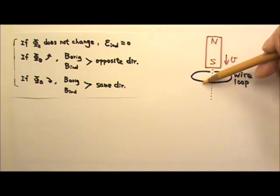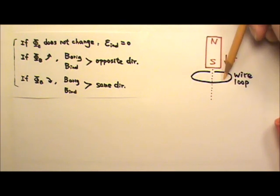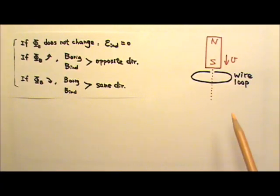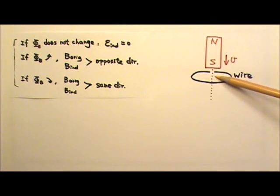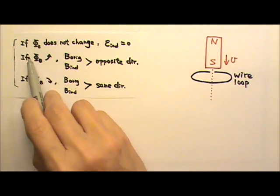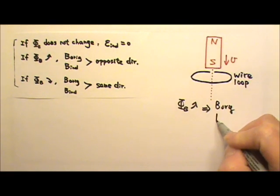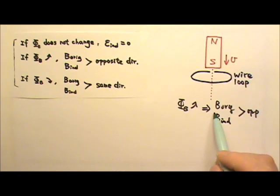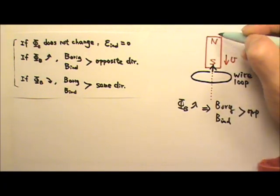For example, here I have a wire loop, and we are inserting this magnet into the wire loop. This v is the velocity of the magnet going down. Let's find the direction of the induced current. First, we look at whether and how the flux changes. Because we are pushing the magnet into the loop, we are making the magnetic field stronger, so the flux is increasing. The original magnetic field is produced by this magnet — field lines go into the south and out of the north — so the original magnetic field goes upward.